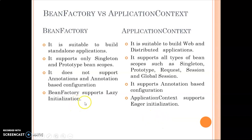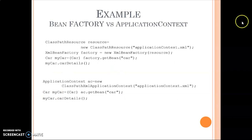A very important concept: BeanFactory supports lazy initialization, whereas ApplicationContext supports eager initialization. With BeanFactory, the object of a bean is created only when you call the getBean() method. With ApplicationContext, objects are created at the very initialization stage when the application starts. This is also why BeanFactory consumes less memory — it only gets objects when getBean() is actually called.